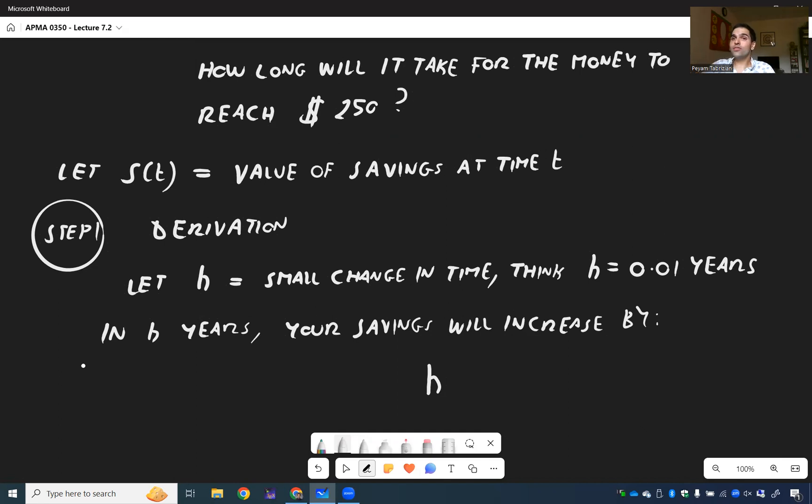Now, of course, the more savings you have, the more it will increase. So in fact, it should depend on S(t). If you have a million dollars, you will get more money than if you had $100.